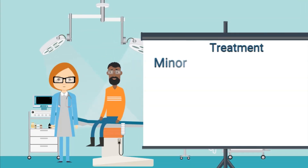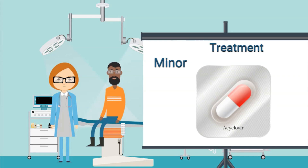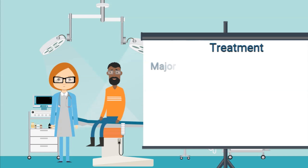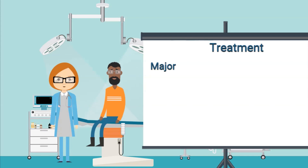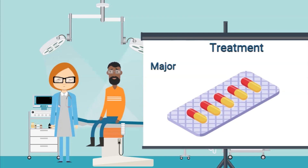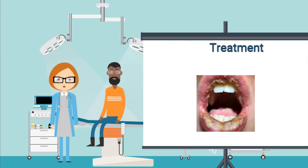Erythema multiforme minor can usually be treated using symptomatic measures such as keeping the mouth clean and using bland mouth rinses. Acyclovir 400 to 600 mg daily may be effective in preventing recurrences in patients who have an HSV-triggered disease. In erythema multiforme major, topical corticosteroids along with antifungals may help control the disease. Since erythema multiforme major is mostly associated with drug etiology, discontinuation of the causative drug such as a sulfa drug should be done. Topical anesthesia can also be given along with analgesics.